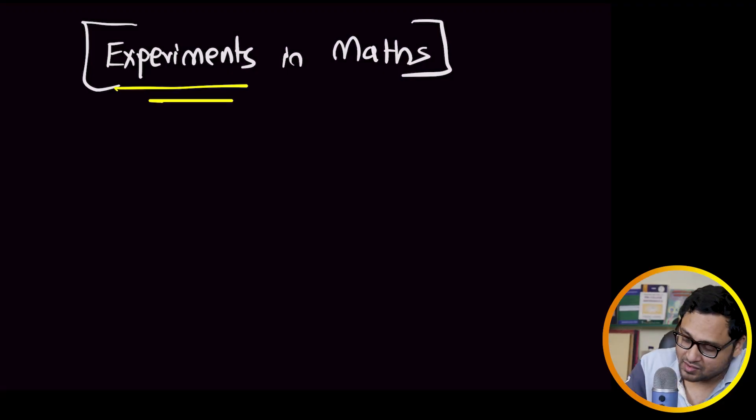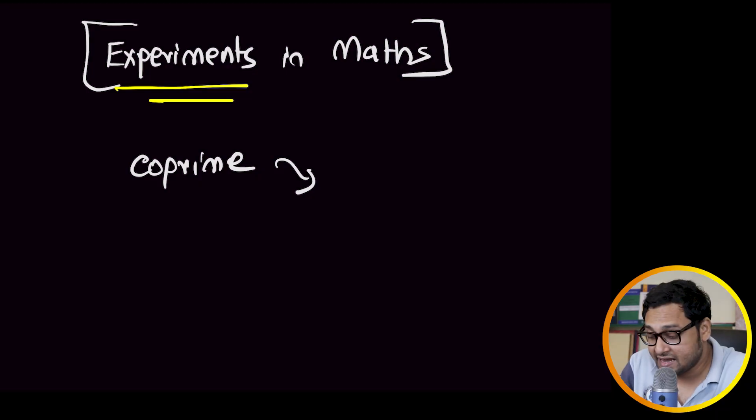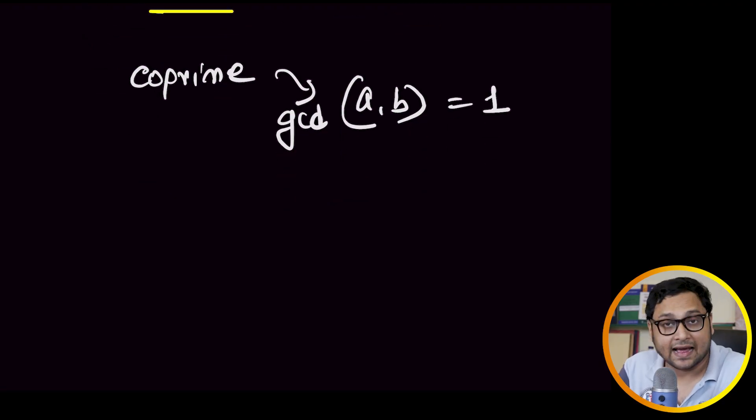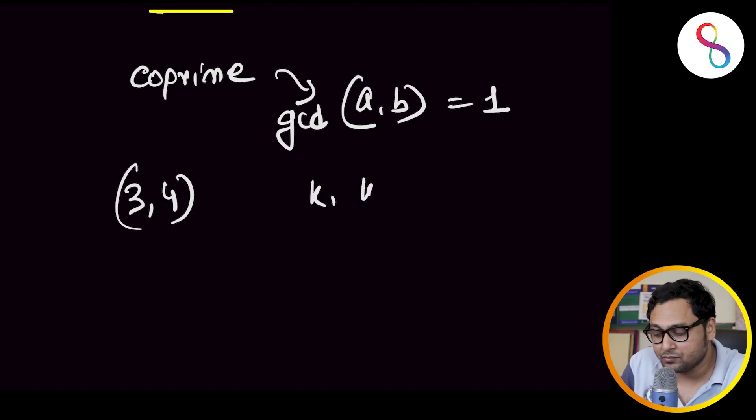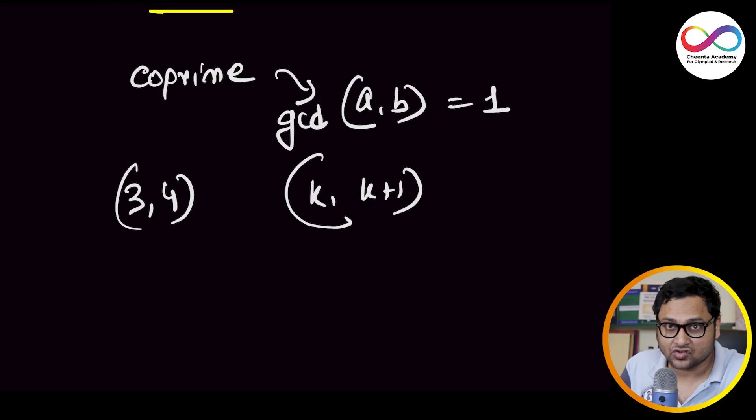This is much more fun. So suppose I ask you, what are co-prime numbers? OK, so co-prime numbers are two numbers A and B, whose GCD, the greatest common divisor, is 1. For example, you will quickly realize that 3, 4 or any two consecutive numbers are co-prime to each other. That's great.